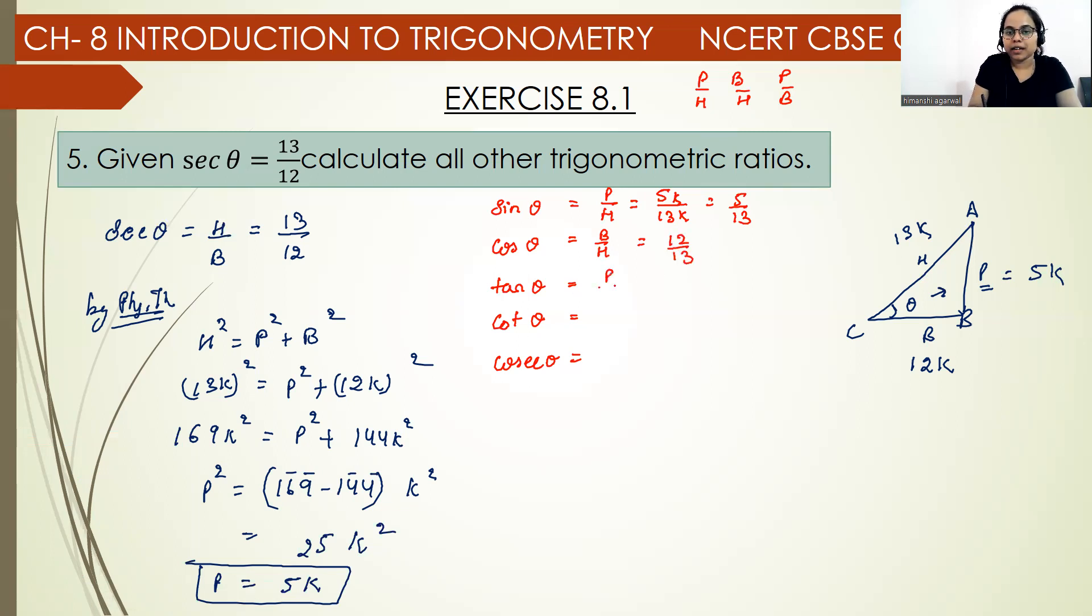Tan theta is perpendicular upon base, so perpendicular is 5 and base is 12, giving us 5 upon 12. So these are all the other trigonometric ratios.